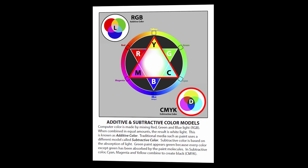Traditional media, such as paint, uses a different model called subtractive color. Subtractive color is based on the absorption of light. Green paint appears green because every color except green has been absorbed by the paint molecules. In subtractive color, cyan, magenta, and yellow combine to create black. This is known as CMYK.